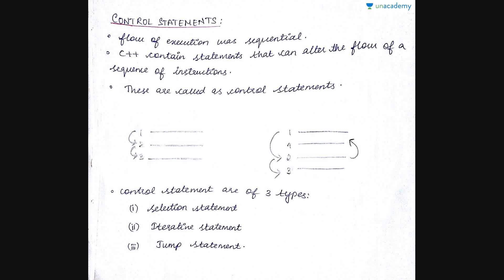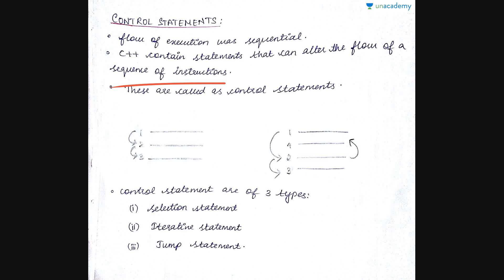Control statements alter the flow — execution was sequential, but C++ contains statements that can change the sequence of instructions. Such statements are called control statements. In this example you have three statements one, two, and three. Normally the order is sequential, but with control statements after one, two gets executed, after two, three, and then again two — the order changes.